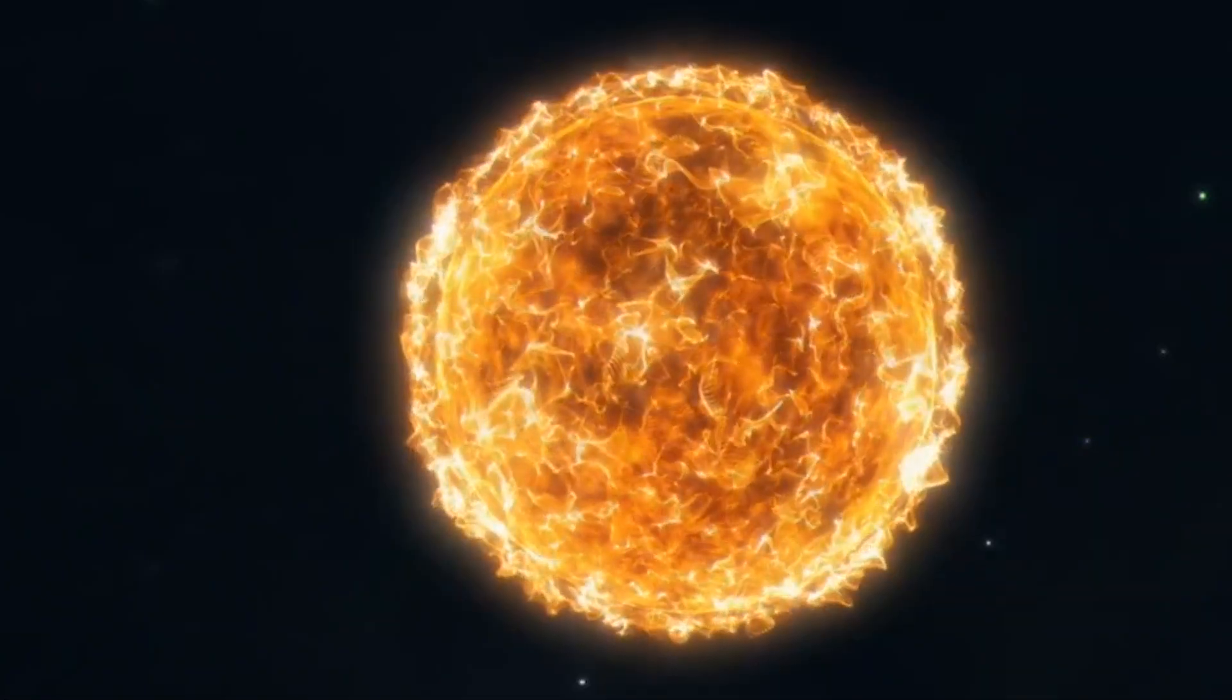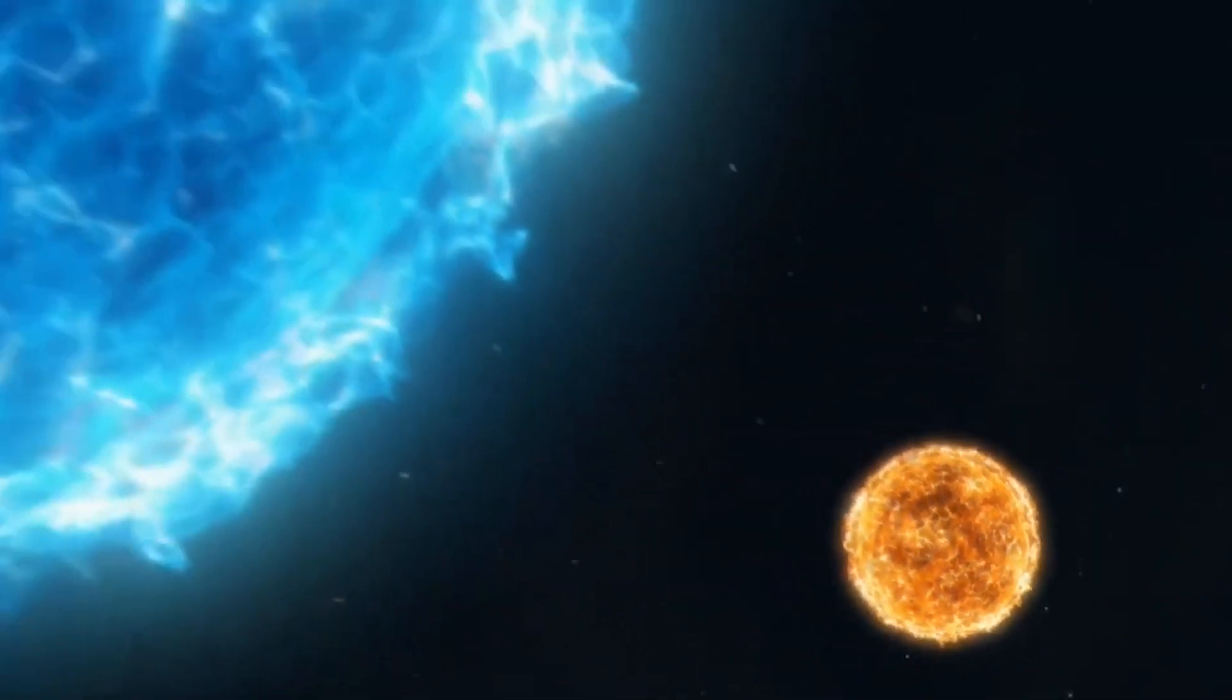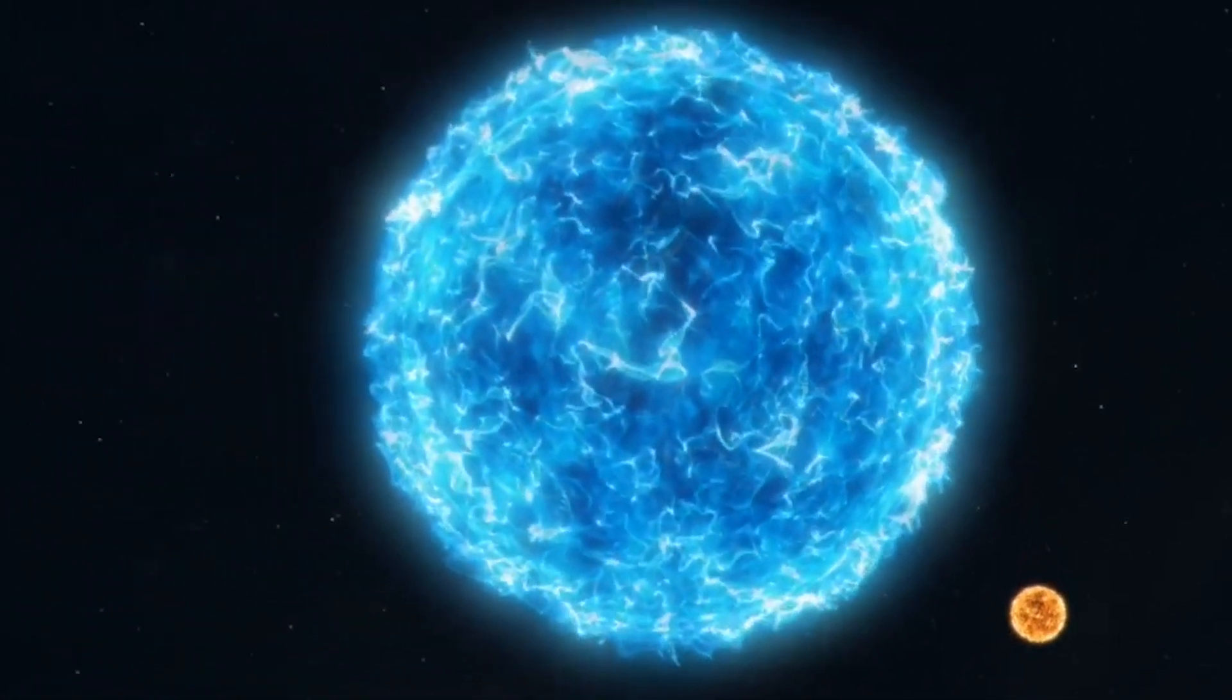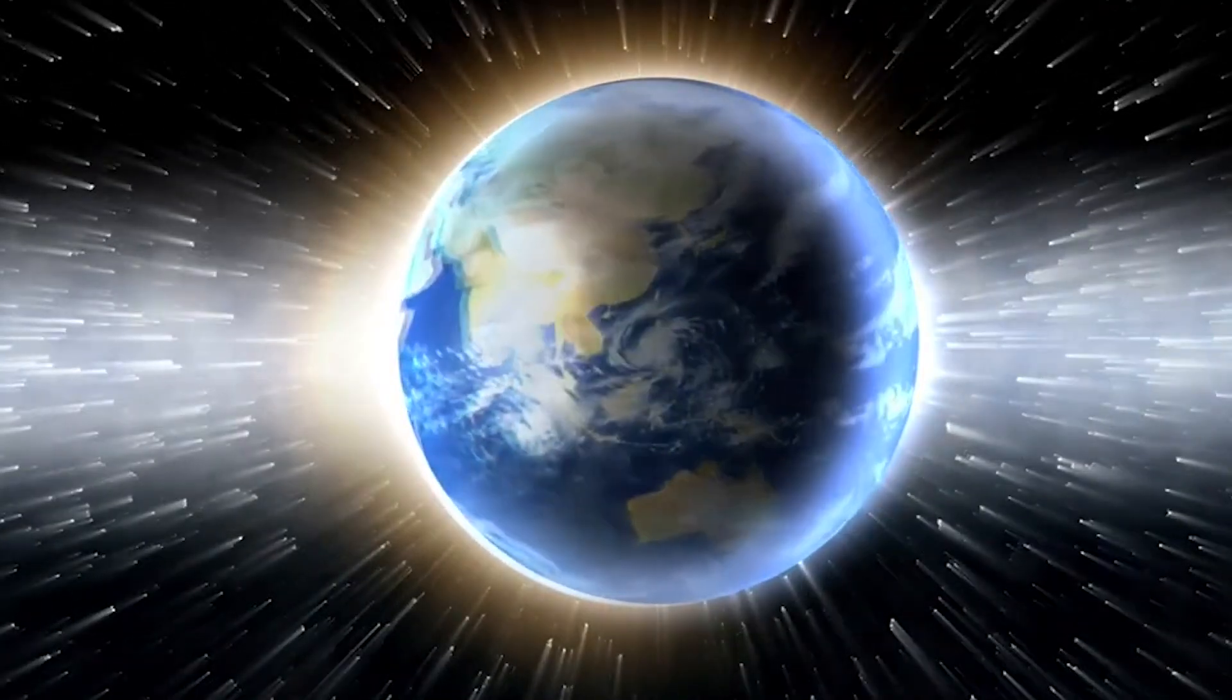Canopus, also known as Alpha Carinae, is the second brightest star in the night sky, located in the constellation Carina, approximately 310 light years from Earth.